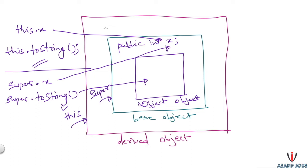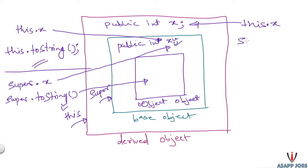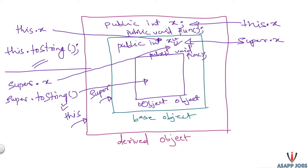We can also access any public or protected member of the base class through the super keyword. So 'super.x' refers to the base class variable x, and 'super.toString()' accesses the method defined in the Object class. Now you might wonder: if 'this' does all the job, why do we need super? The super keyword comes in handy when we have duplicate member variables or methods defined inside the derived class. For example, if we have 'public int x' in the derived class and call 'this.x', it will refer to the derived class variable, not the base class one.